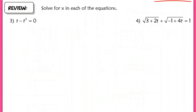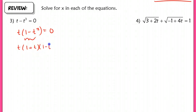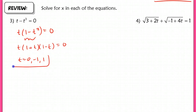For problem 3, I'm going to try to factor this first. I notice that I can take a GCF out, so I'm going to do that right away. I'm left with 1 minus 2, times (1 minus t²). This is factorable, so I have (1 plus t)(1 minus t) here. I'm going to get 3 unique solutions: t equals 0, negative 1, and 1.